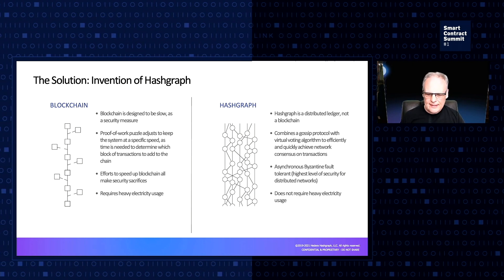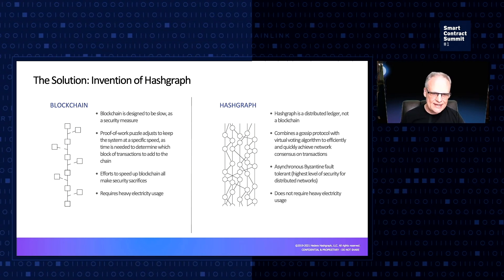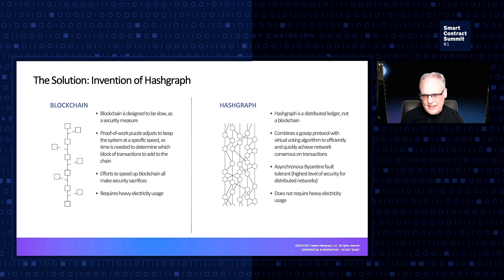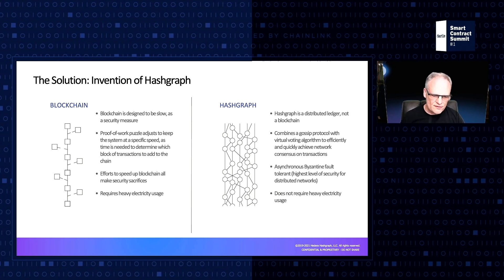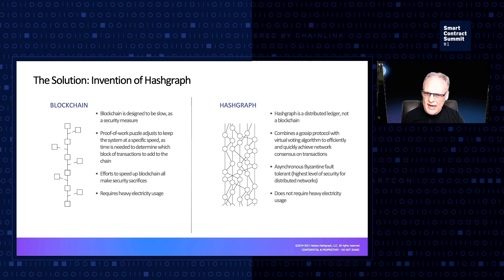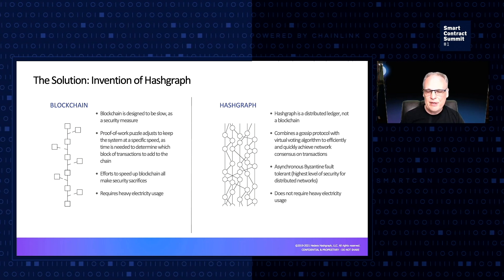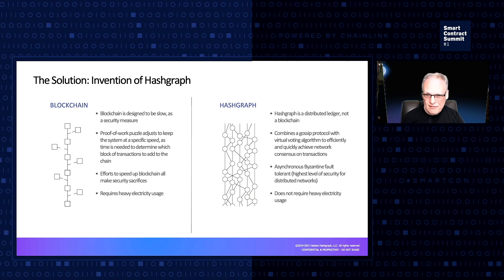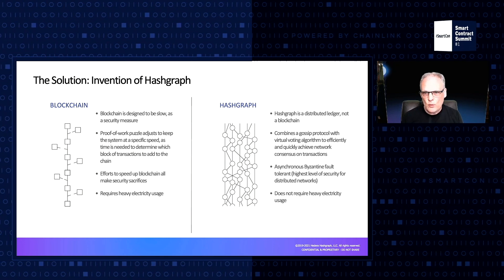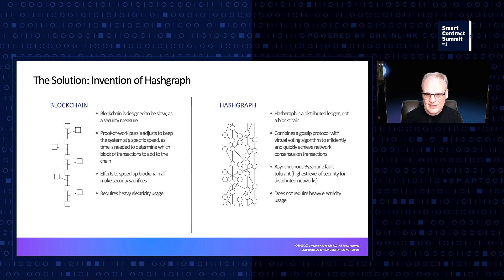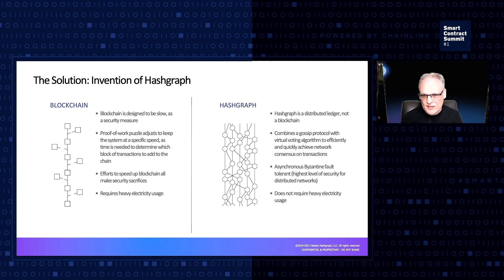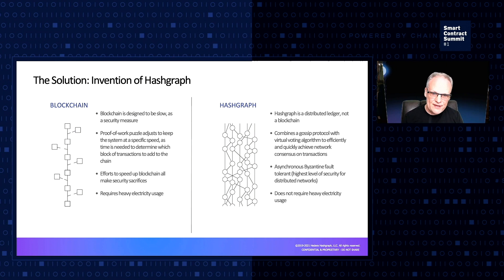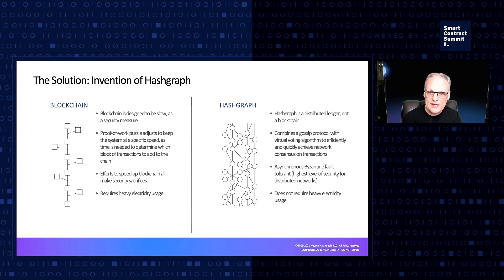What does that mean practically speaking? There are categories of attacks that simply aren't possible in the same ways that they're possible with non-ABFT protocols — distributed denial of service attacks, attacks on firewalls that can partition networks. There's a range of attacks that one has to be concerned about with a consensus algorithm. ABFT eliminates those categories. Hashgraph implements ABFT while at the same time achieving fantastic performance, and that's the innovation. ABFT has been around for decades, but there's always been a trade-off between security and performance. What Lehman invented was a consensus algorithm that achieves both simultaneously.